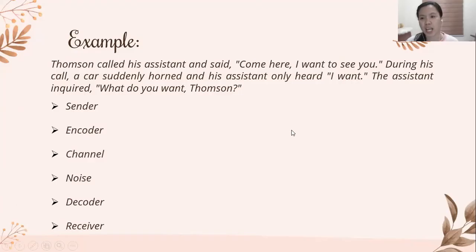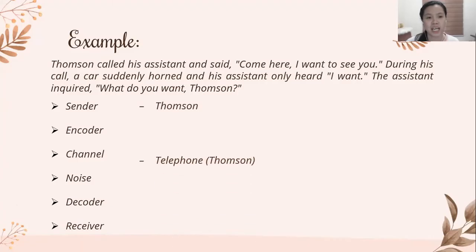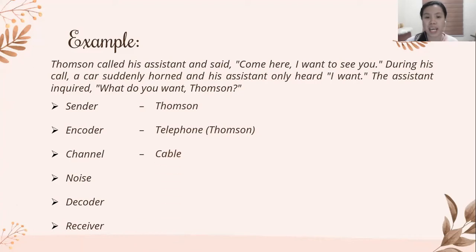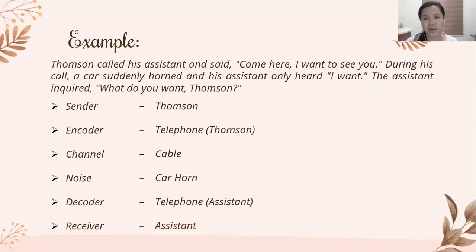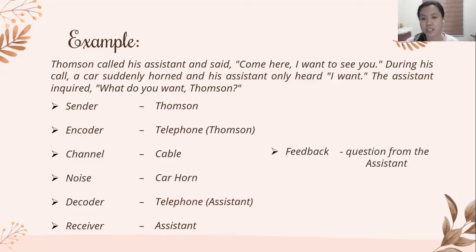Again, what are the elements? In the Shannon-Weaver model, we have the sender, the encoder, the channel, the noise, the decoder, and the receiver. Who is the sender? Thompson. The encoder would be the telephone of Mr. Thompson. The channel would be the cable or the electrical wires. The noise is the car horn. The decoder is the telephone used by the assistant. And our receiver is the assistant. Additionally, we have the feedback, which is the question from the assistant: "What do you want, Thompson?" So that is the feedback.